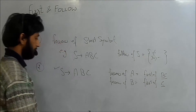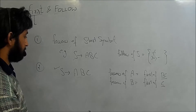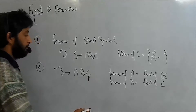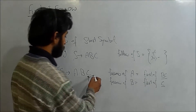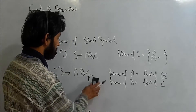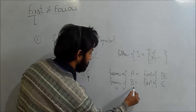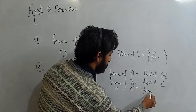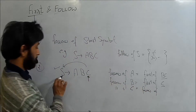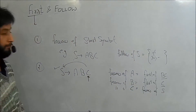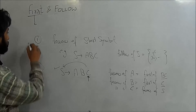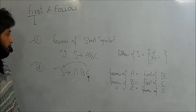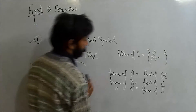If we need to find FOLLOW of C, and nothing is following C in the production, then in this condition FOLLOW of C will be FOLLOW of S — the FOLLOW of the left-hand side non-terminal, not its FIRST. These are the two main rules to remember when finding the FOLLOW of a given grammar.